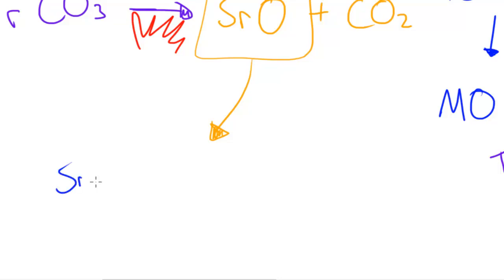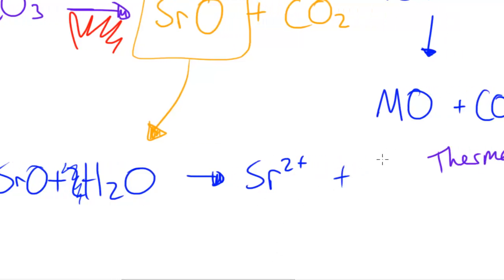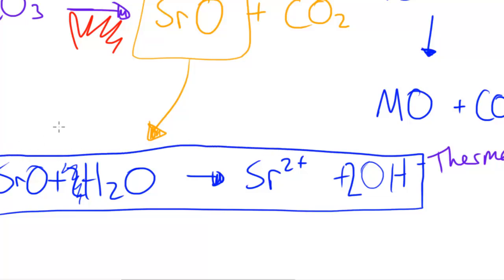You basically have a reaction of SrO. My pen seems to be acting strange, let me pause it for a second. Okay, the SrO would react with H2O, and that would form Sr²⁺ since it just dissociates when it forms that, so it would have the ions, and it would form the OH⁻. Since we've got two hydrogens, two oxygens, we're going to have 2OH⁻ and the charge is balanced in this equation. This is what happens if you now take that oxide and react it with water.